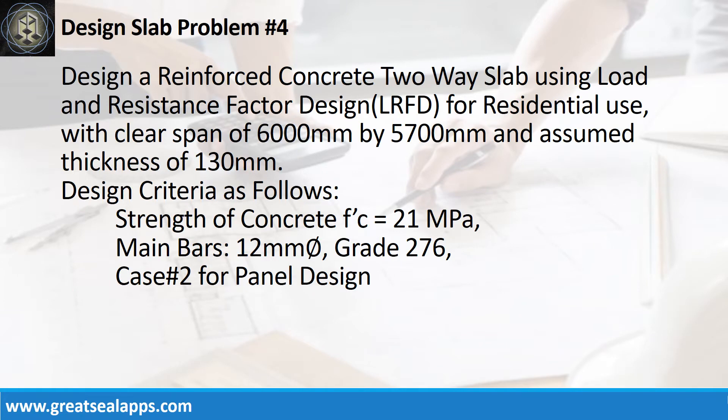Design a reinforced concrete two-way slab using load and resistance factor design for residential use with a clear span of 6,000 mm by 5,700 mm and an assumed thickness of 130 mm. Design criteria are as follows.